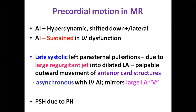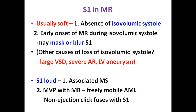The apical impulse in MR is hyperdynamic and becomes sustained when there is LV dysfunction. Late systolic left parasternal pulsations can be due to a large regurgitant jet into the LA — this is not because we are palpating the LA itself but the outward movement of anterior cardiac structures due to the large regurgitant jet, mirroring the large LA V wave. This is asynchronous with the apical impulse because it is late. Pulmonary hypertension can cause parasternal heave which must be differentiated — the parasternal heave from PH is more medial, coincides with the apical impulse, and is associated with epigastric pulsations.